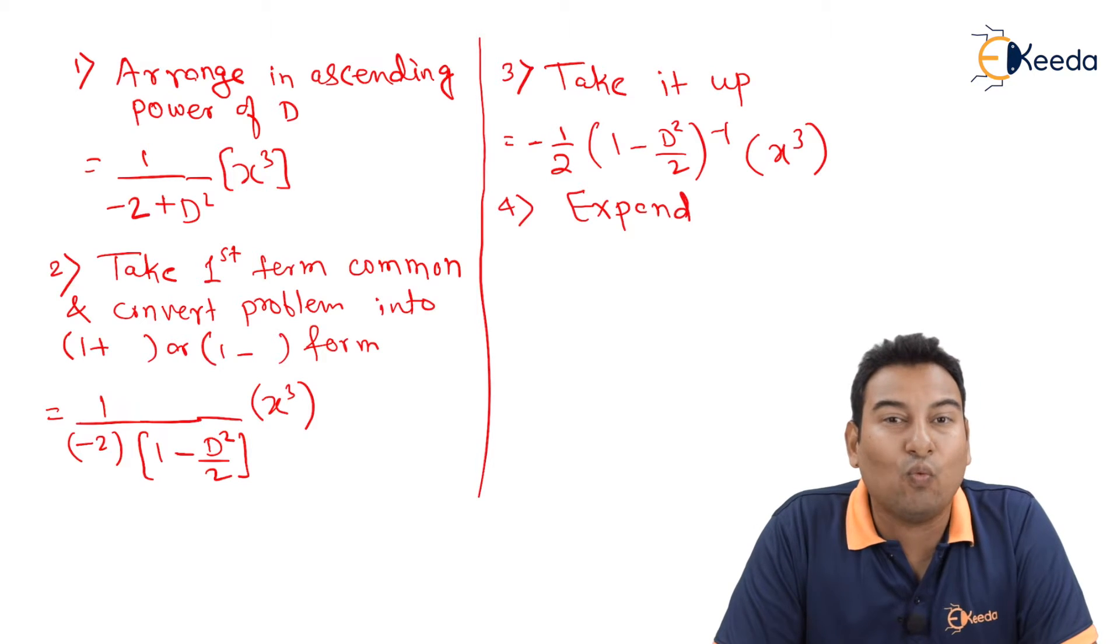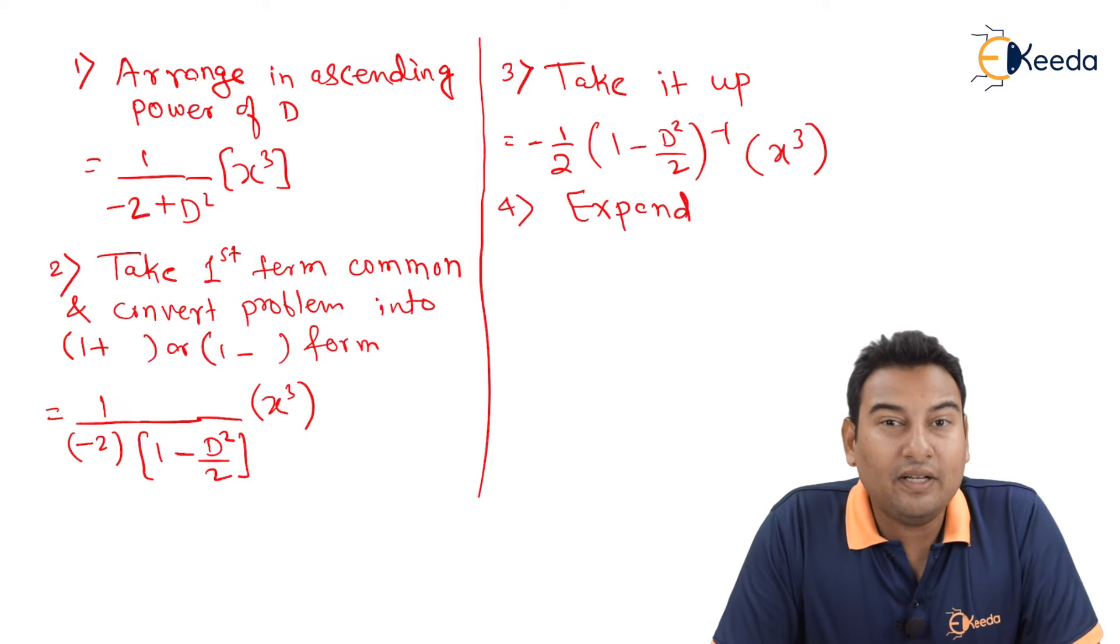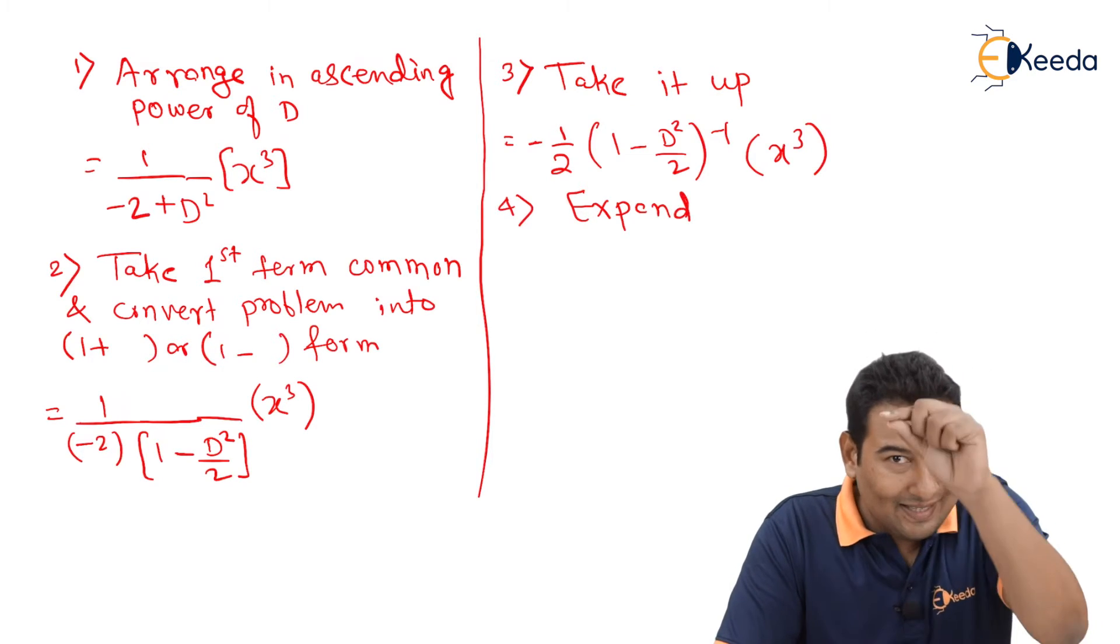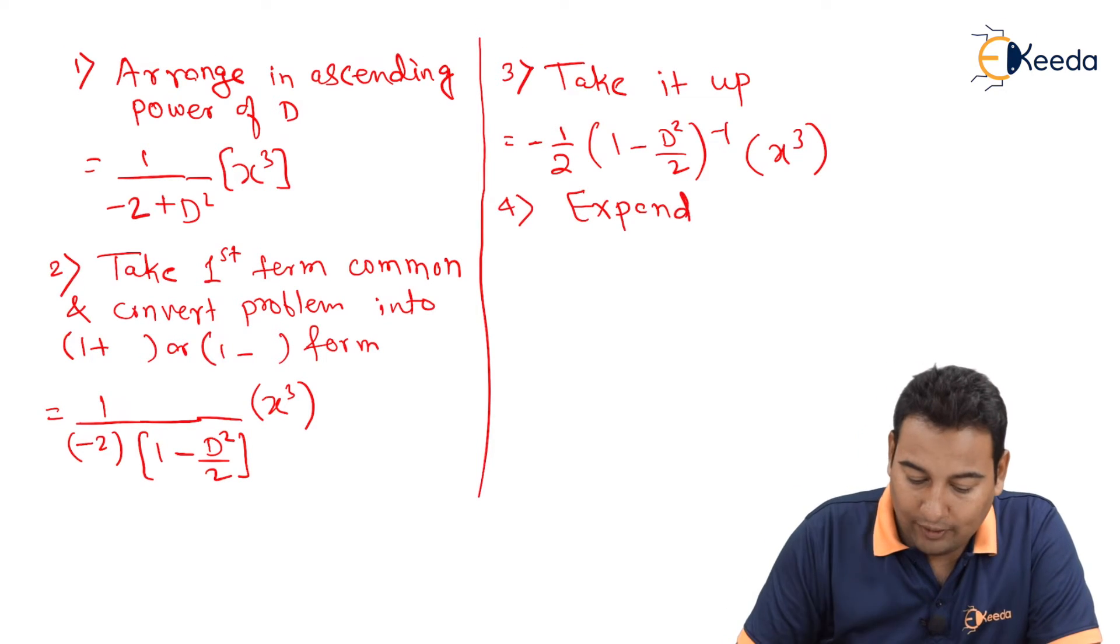And if it is (1 plus x) inverse, it is alternate plus minus. And if it is (1 plus x) inverse plus n minus, then it will be alternate plus minus. That is 1 minus x plus x² minus x³ and so on.